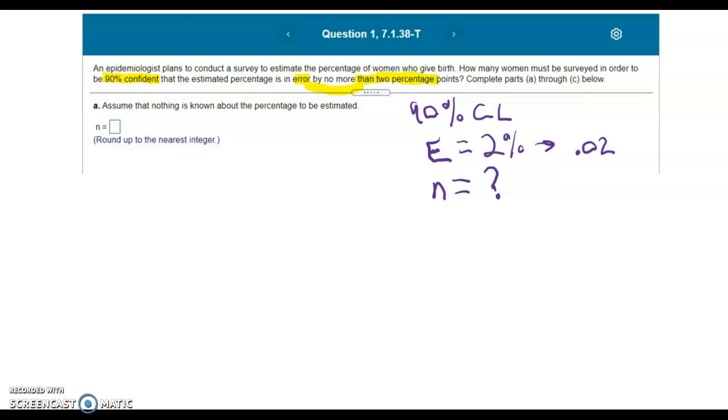And those formulas can be found on page 7 of your 7.1 guided notes. You can see on page 7 of your guided notes, we have determining sample size for proportions.